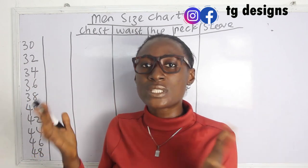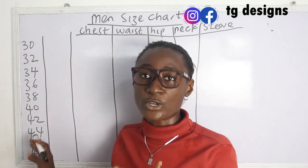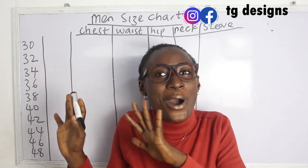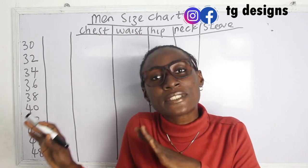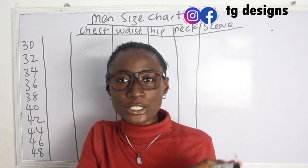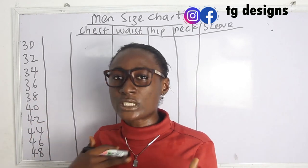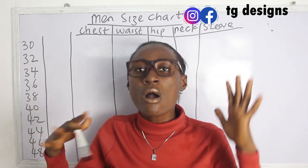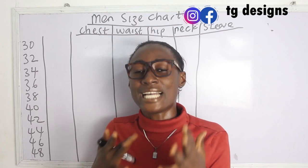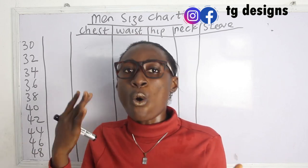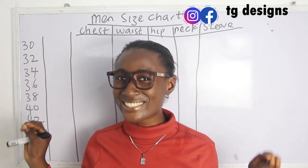We are starting today with our size charts. Basically we have from size 30 to size 48, however you can go ahead and increase yours to 50, 52 — it depends on you. Size 48 is actually like extra large for male, but I'm going to show you the formula to calculate it so once you get the formula you can increase it as much as you want.